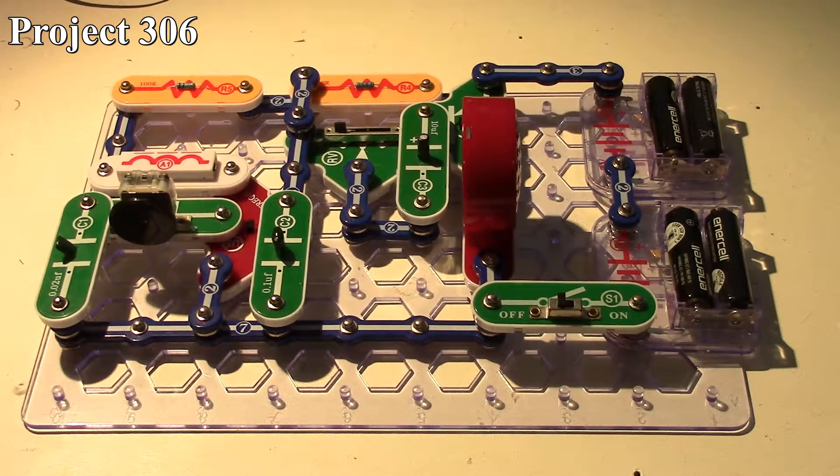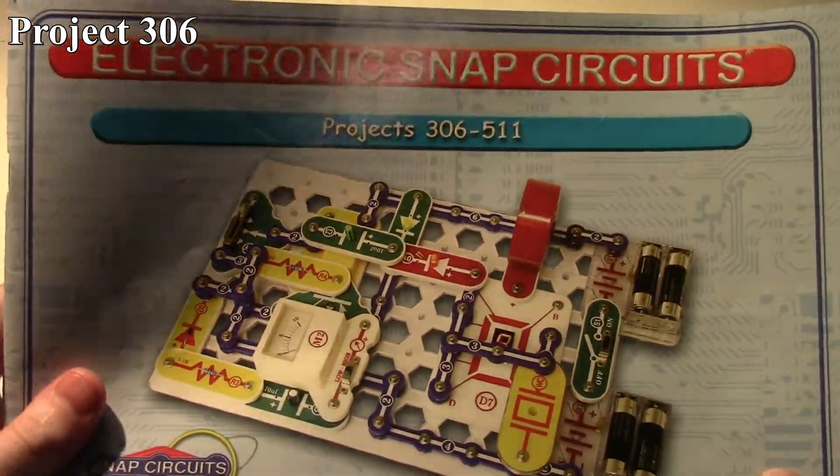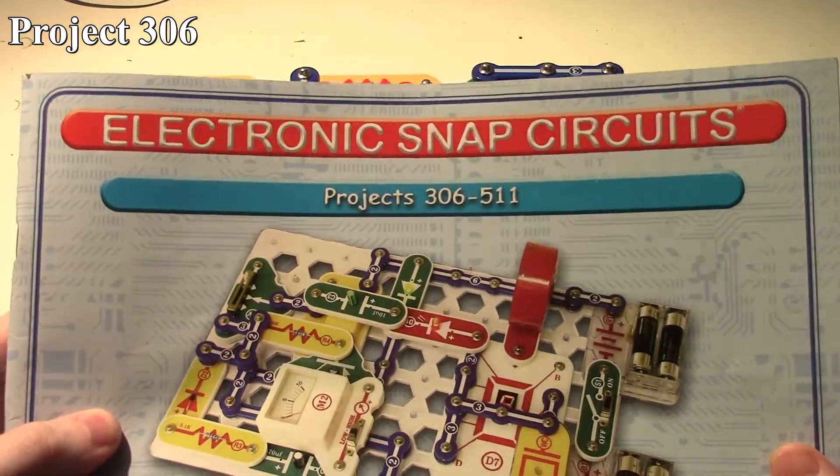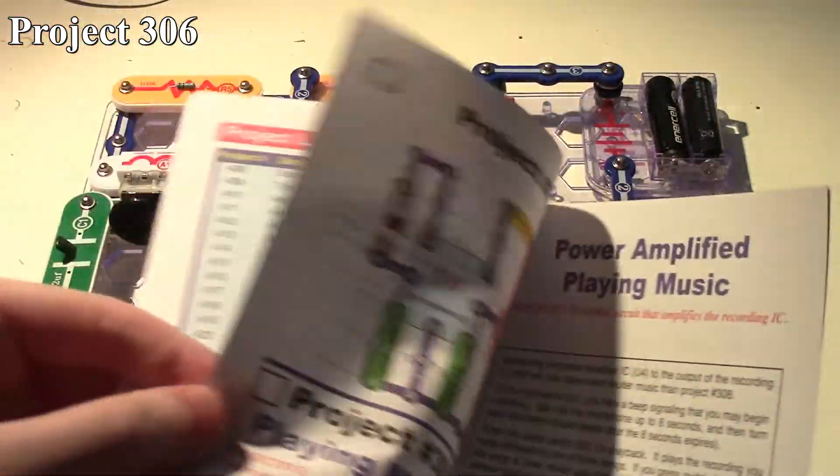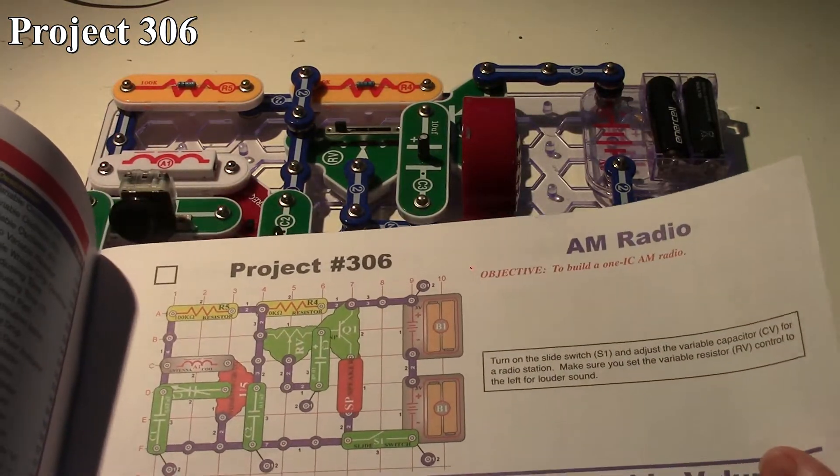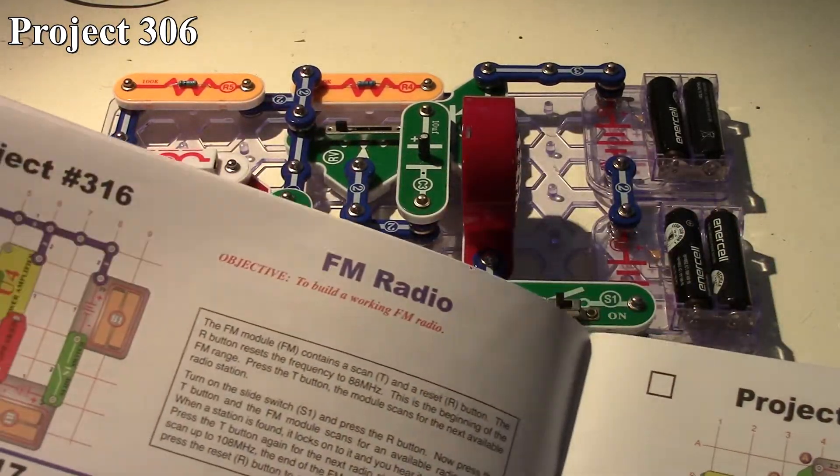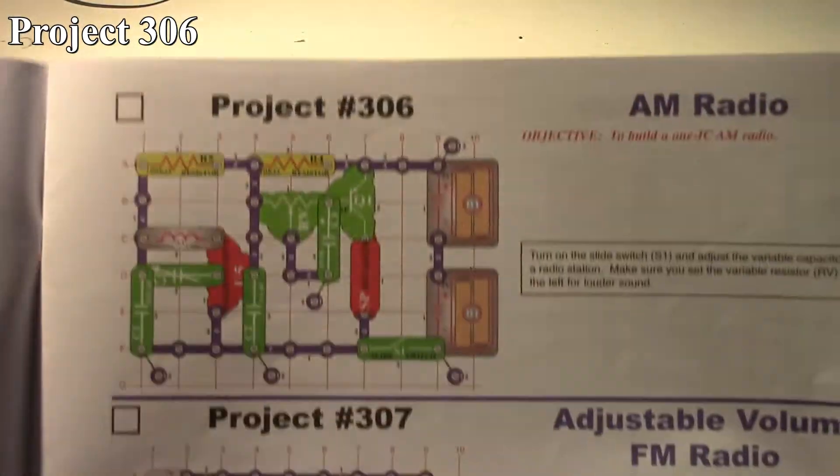In this series of Snap Circuits videos, we're going to look at projects for the SC 500 system, going from projects 306 all the way to 511. We're going to start with project 306, the AM radio, and go to project 316, the FM radio.